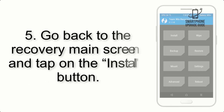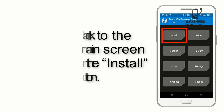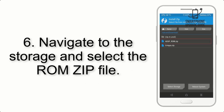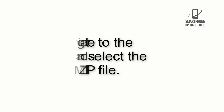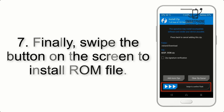Step 4: Swipe the button to wipe the device. Step 5: Go back to the recovery main screen and tap on the Install button. Step 6: Navigate to the storage and select the ROM zip file.